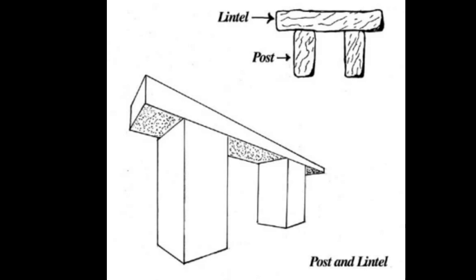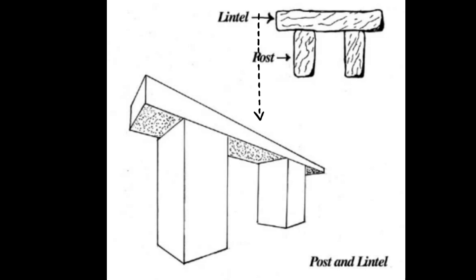Post and lintel construction spans from the Egyptians and Greek stone construction to medieval timber frame buildings and even cast iron and steel construction. It does, however, have its limits. The limitation is the span and the degree of tensile strength of the lintel material. The farther you take those posts apart, the center of that lintel gets weaker and weaker to a point where it sags and breaks. This is critical to understanding Stonehenge's construction.